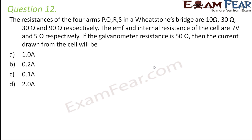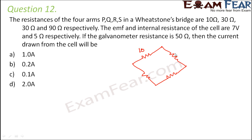If the galvanometer resistance is 50 ohms, then the current drawn from the cell will be? Reading the question is a bit tough, so instead let's draw the diagram. We draw the Wheatstone bridge with resistances 10 ohms, 30 ohms, 30 ohms, and 90 ohms respectively, and a galvanometer connected in the bridge.